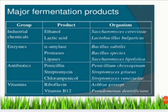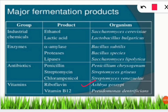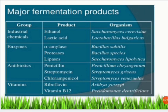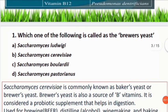Vitamins are also obtained from microorganisms. Riboflavin (vitamin B2) is obtained from Ashbya gossypii species; vitamin B12 is obtained from Pseudomonas denitrificans. Remember: riboflavin is vitamin B2, and vitamin B1 is thiamine. Connect this new knowledge with previous knowledge for effective revision.